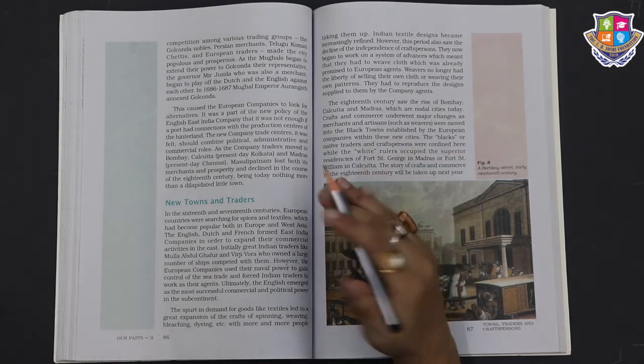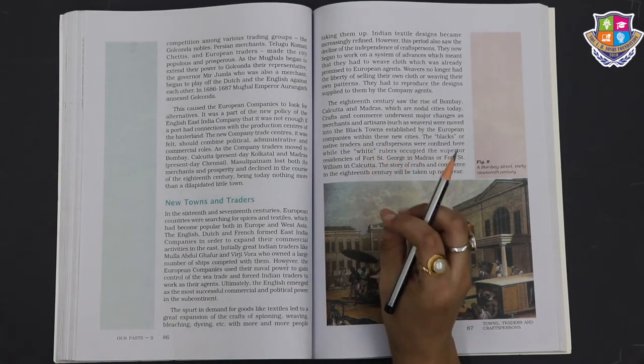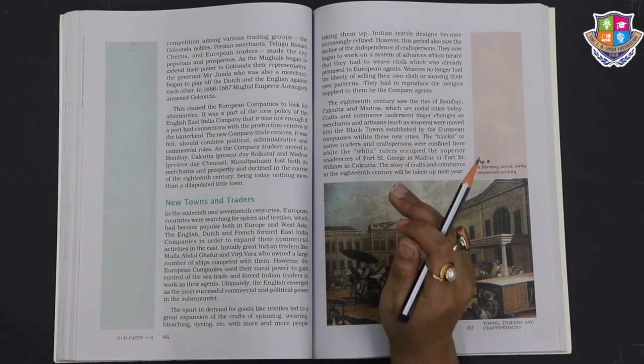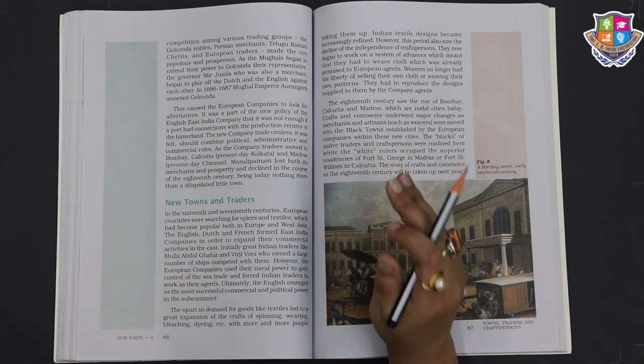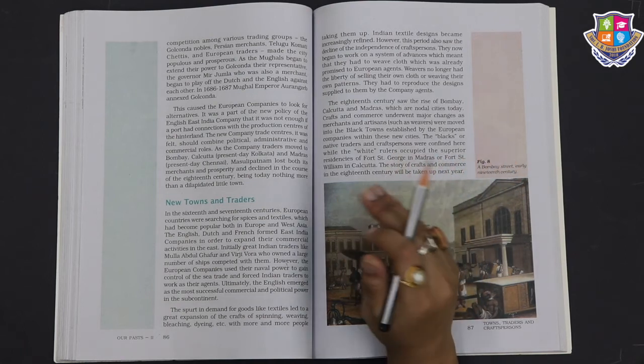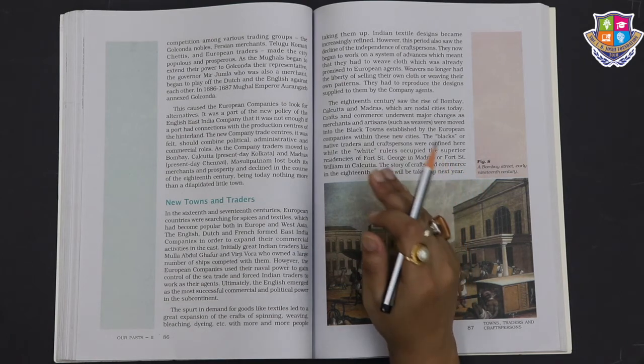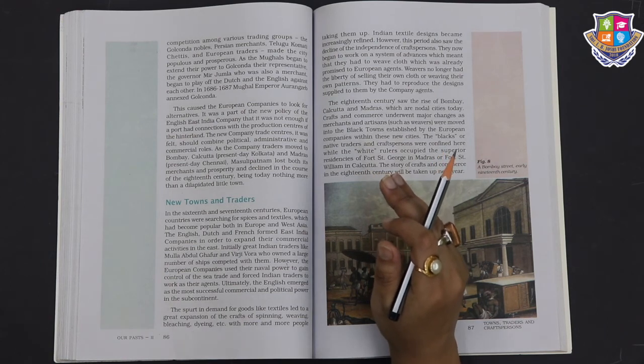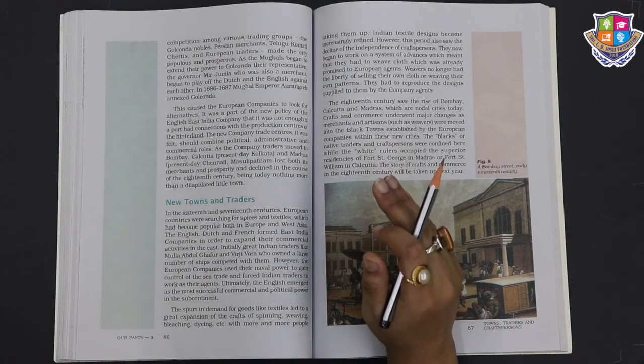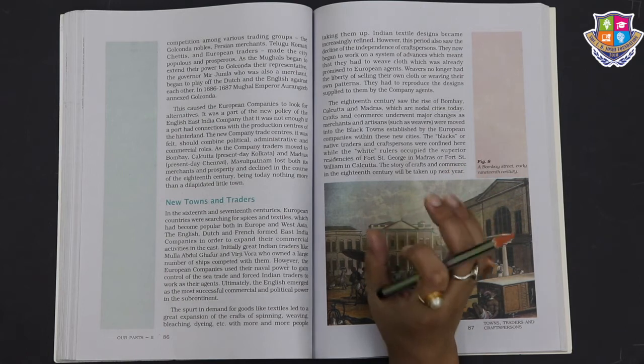The 18th century saw the rise of Bombay, Calcutta, and Madras, which are nodal cities today. Crafts and commerce underwent major changes as merchants and artisans were moved into the black towns established by the European companies within these new cities. The blacks or native traders and craftspersons were confined here, while the white rulers occupied the superior residences of Fort St. George in Madras or Fort St. William in Calcutta. The Britishers and East India Company divided into black and white. All the blacks, that is the Indians, were sent to the new cities. And the whites, that is the Britishers, started ruling and occupied almost all the parts of the cities.